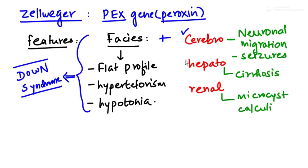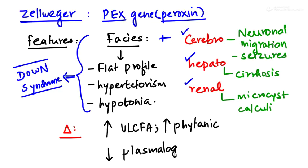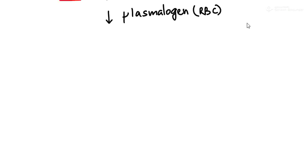For diagnosis of Zellweger syndrome: because peroxisomes are involved in oxidation of very long chain fatty acids, there is an increase in their levels due to impaired oxidation. Phytanic acid oxidation is also affected, so phytanic acid levels are increased. Because plasmalogen synthesis is affected, erythrocyte plasmalogen levels are decreased.